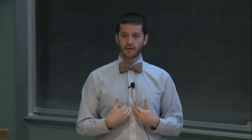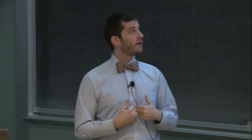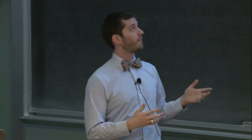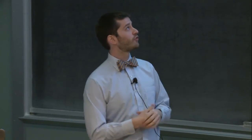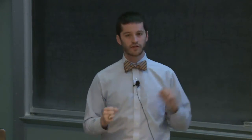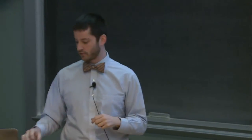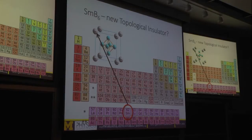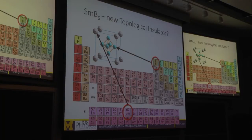SMB6 is an actual crystal we study in our lab, and it's proposed to be a topological insulator. Here I have a picture of the crystal structure of SMB6 — a collection of atoms. SM is samarium, and in the middle are boron atoms. Below that crystal structure is an actual picture of the crystal we are measuring in our lab — it has a kind of black, shiny surface.